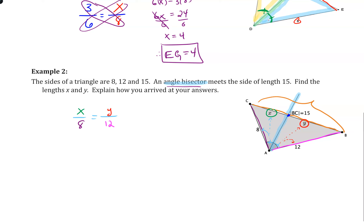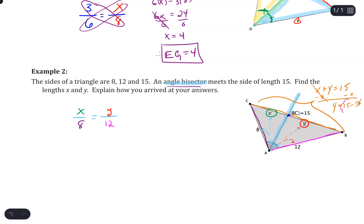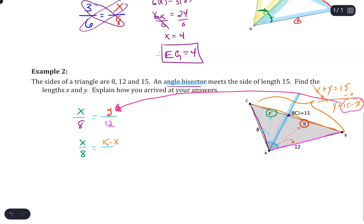Since the entire side BC is 15, that means x plus y equals 15. We can rewrite one variable in terms of the other. Solving for y gives y equals 15 minus x. Now I can substitute that into the proportion, replacing y: x over 8 equals (15 minus x) over 12.